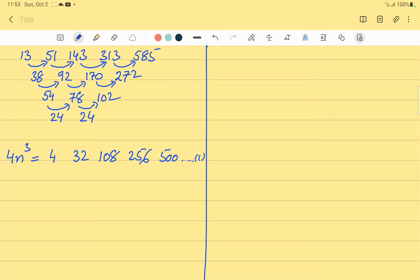Now, we subtract this series which is series number 1 from the original series, the actual series which is given in the question. So that series is 13, 51, 143, 313 and 585. So we are subtracting.